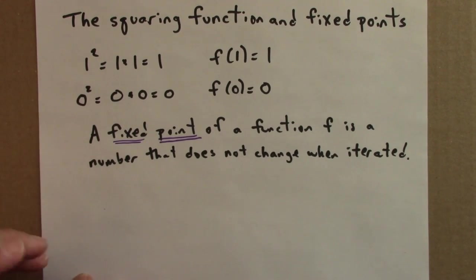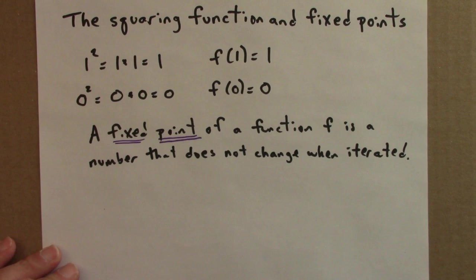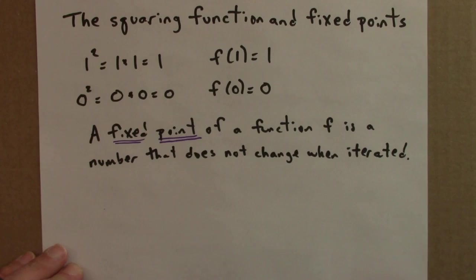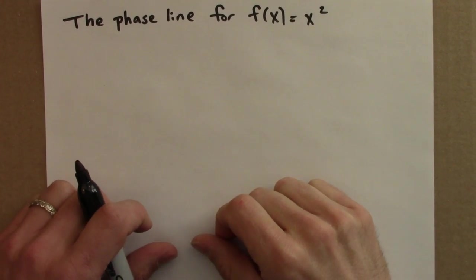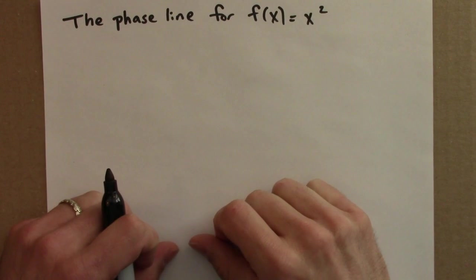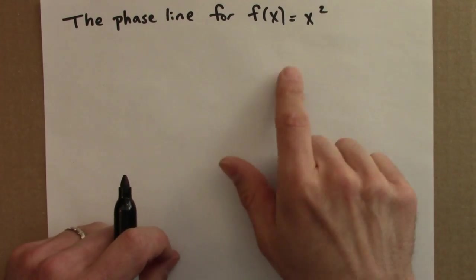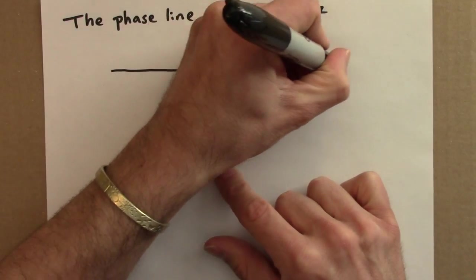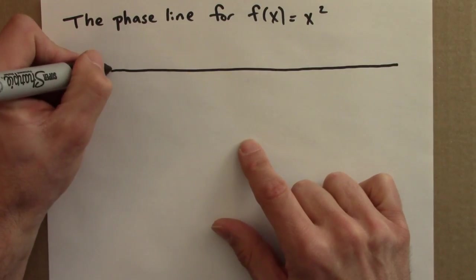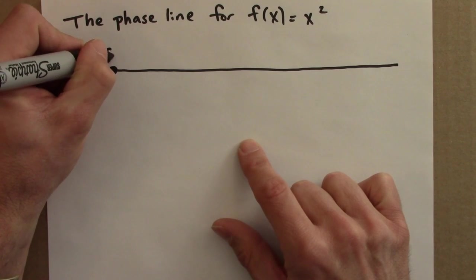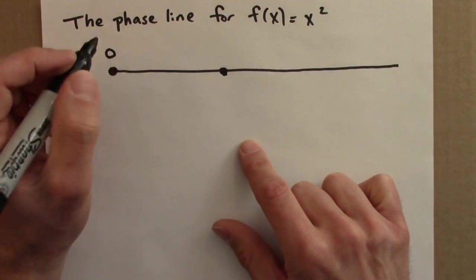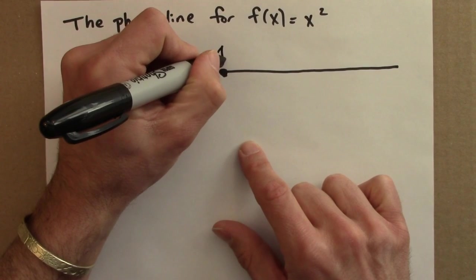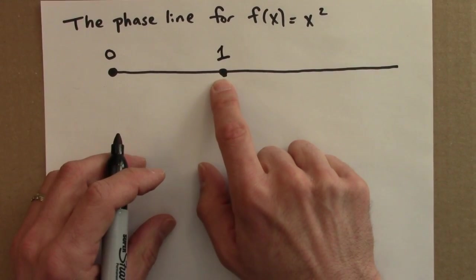Now we're ready to state the dynamics — the long-term behavior of all orbits all at once — and we'll do that with a geometrical construction called a phase line. Here's the phase line for f of x equals x squared. I'm only going to worry about positive x values. I'll draw the number line, with 0 as a dot because it's a fixed point, and 1 as a dot because it's a fixed point.